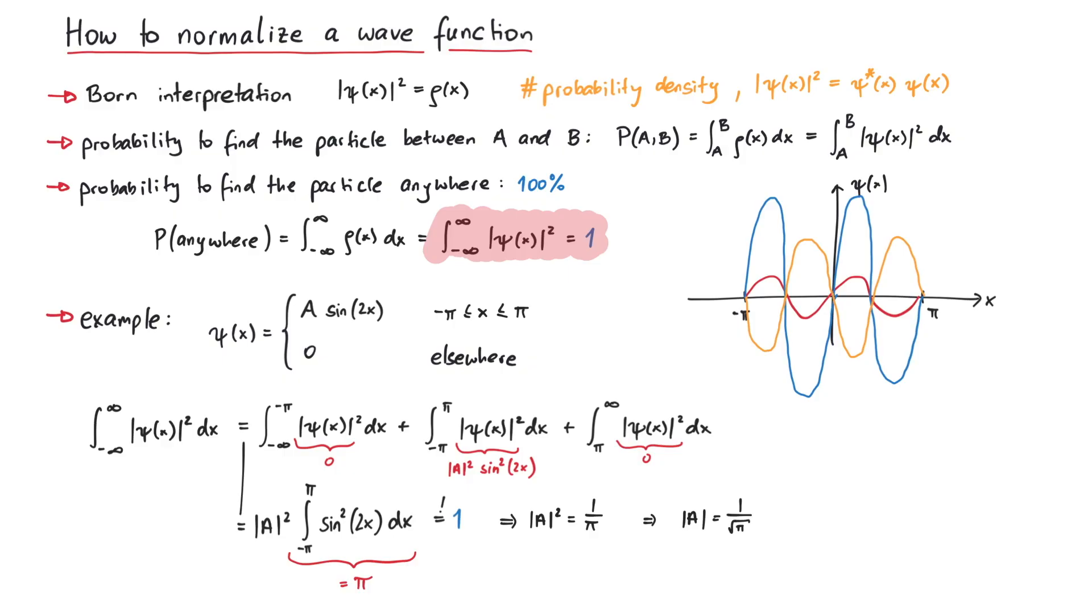Now this is usually as far as we can go, because the normalization condition only helps us to determine the absolute value of A. If we want to write down A itself, we must include a phase factor where phi can be any real number. In this way, the absolute value of the phase factor is equal to 1, and we get this equation again. Our final result for the wavefunction therefore looks like this.